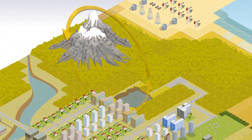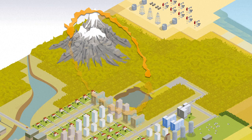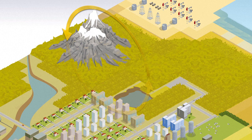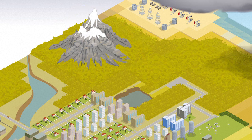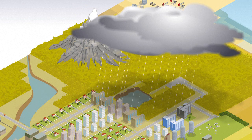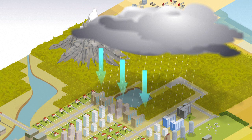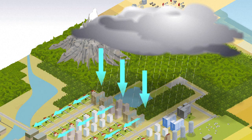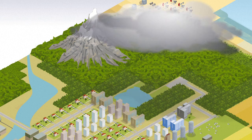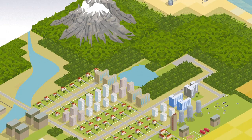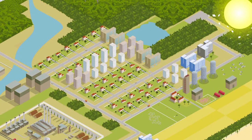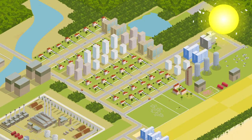Thus, droughts are not always the result of natural climatic conditions. The tension that exists between availability and the demand for water with men and their needs for agriculture and livestock increases the risk of drought. Other human activities like the building of swimming pools, watering of lawns and washing of cars also often aggravate drought conditions.